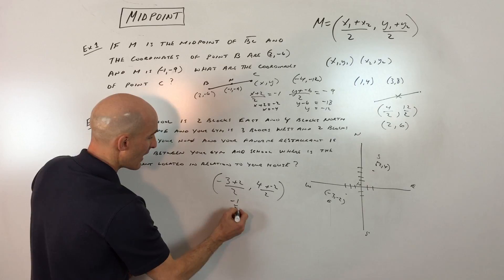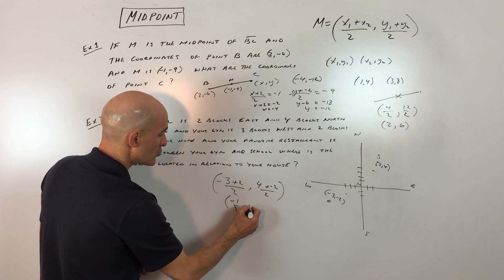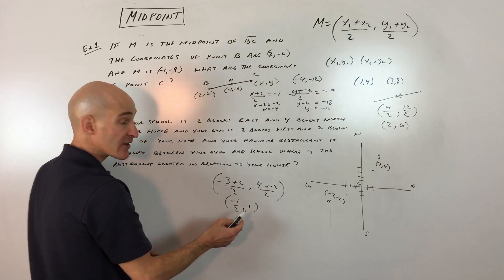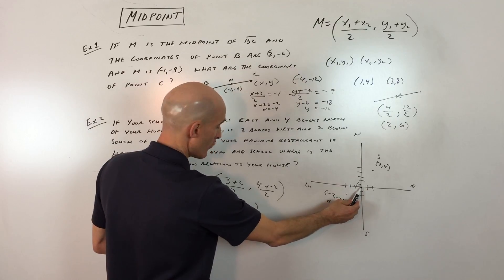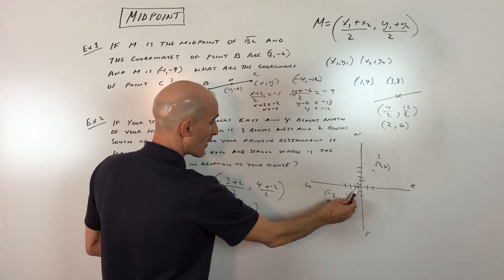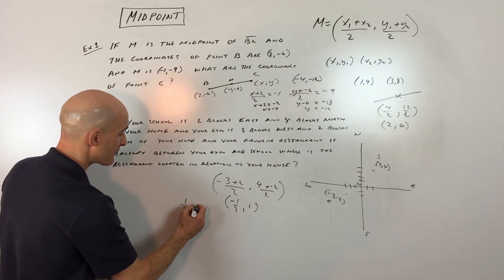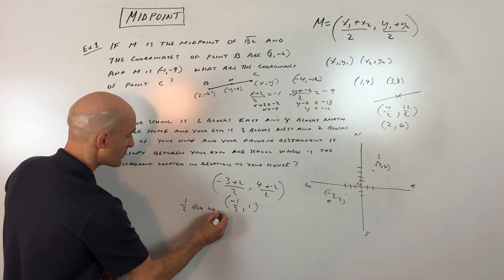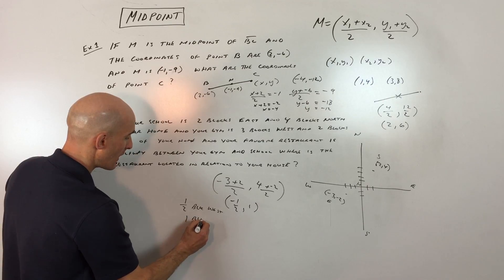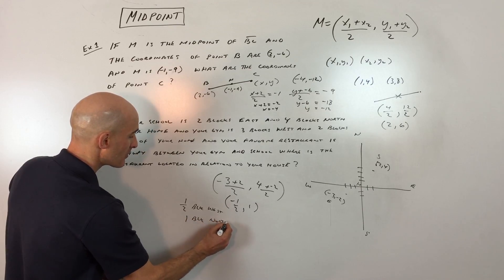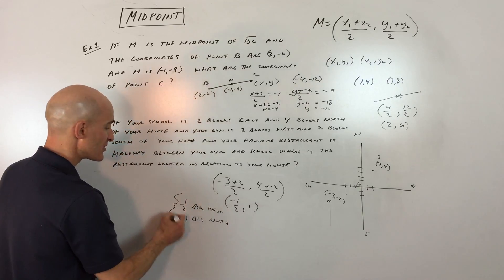That's going to be negative 1 half, and this is going to be 2 over 2, which is 1. Now in the context of this problem, in relation to your home, that's going to be a half a block west and one block north. So I'll just say 1 half block west and one block north. And that would be your solution.